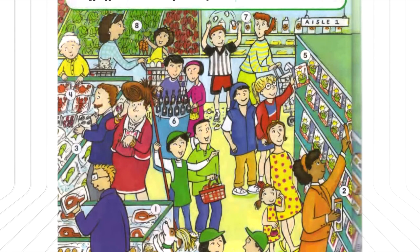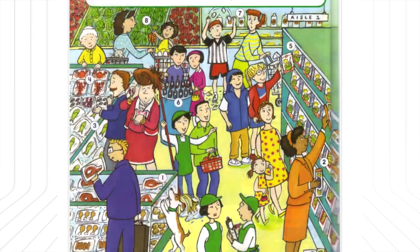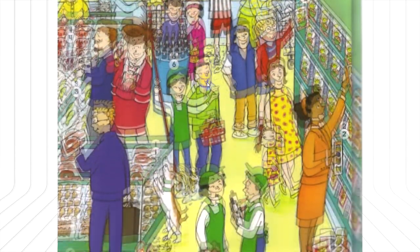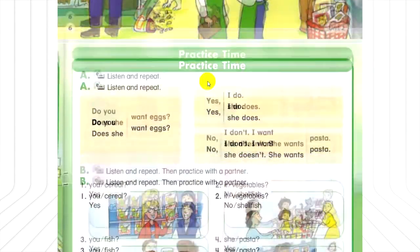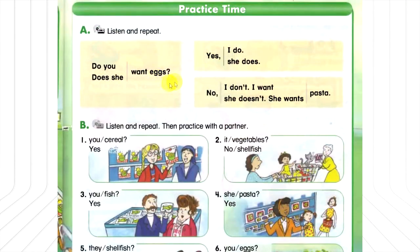Unit 2, page 7. Practice time. Listen and repeat. Do you want eggs? Yes, I do. Do you want eggs? No, I don't. I want pasta. Does she want eggs? Yes, she does. Does she want eggs? No, she doesn't. She wants pasta.